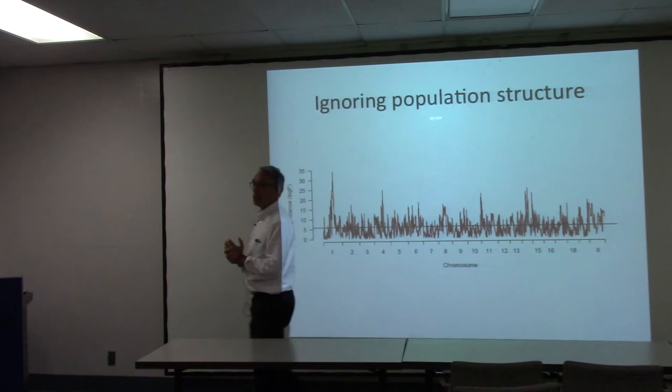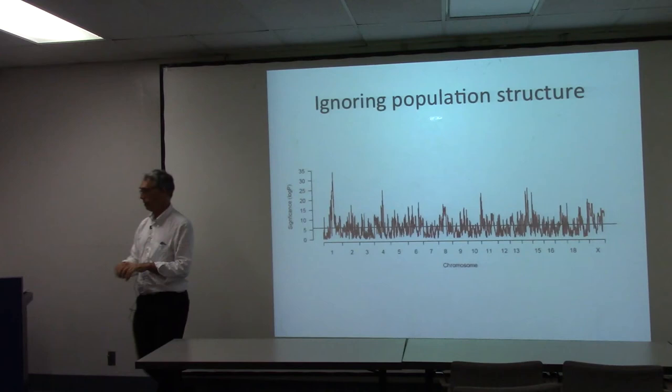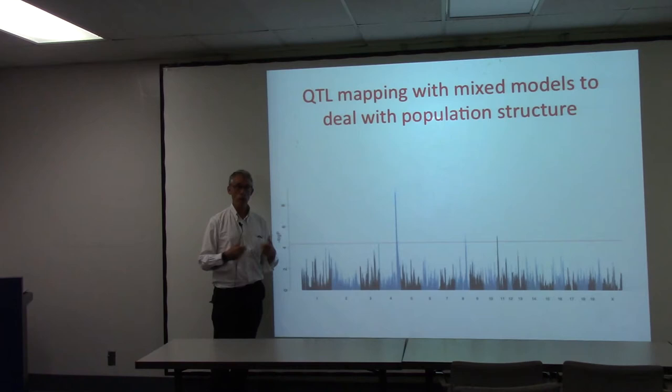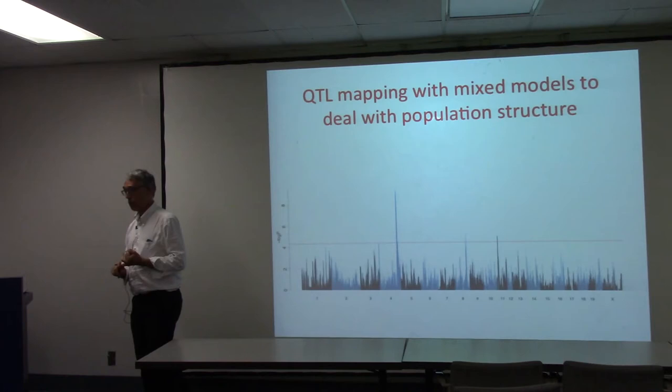The way we currently deal with this is with mixed models. If we do that, things turn into something a little more reasonable — rather than having 200 loci, we have about two or three.